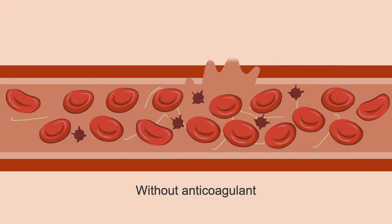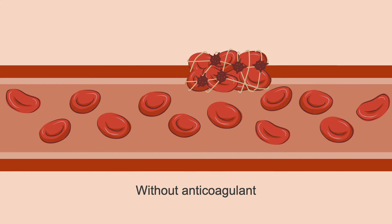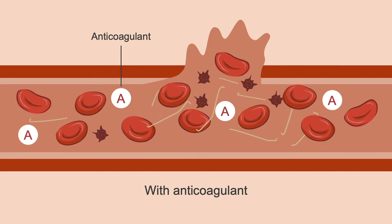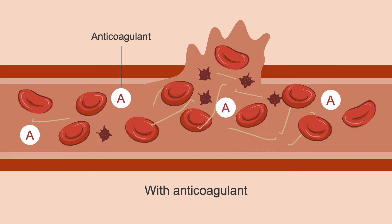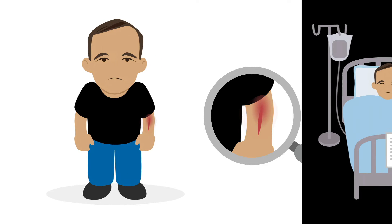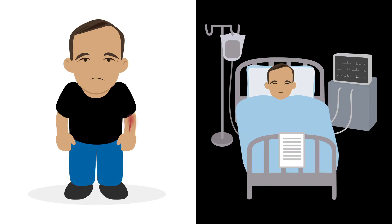When an injury causes bleeding, the body will attempt to limit blood loss by forming a blood clot to plug the wound. Although anticoagulants cannot cause bleeding, they can slow clot formation needed to resolve small bleeding events. This has the potential to turn a clinically insignificant bleeding event into a clinically significant one.